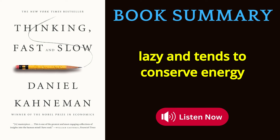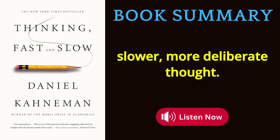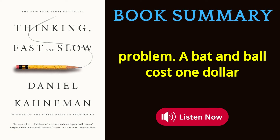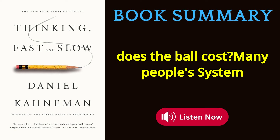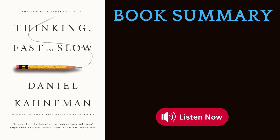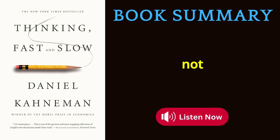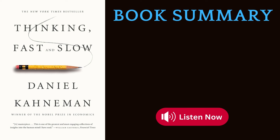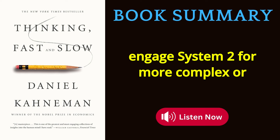However, System 2 is also lazy and tends to conserve energy whenever possible. This means we often default to System 1's quick judgments even when a situation might benefit from slower, more deliberate thought. Kahneman illustrates this with the bat and ball problem: a bat and ball cost $1.10 in total; the bat costs $1 more than the ball — how much does the ball cost? Many people's System 1 quickly jumps to $0.10, but the correct answer is $0.05 (with the bat costing $1.05), demonstrating how intuitive responses can lead us astray.